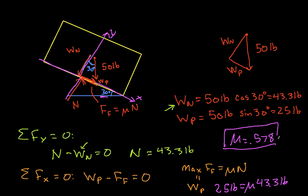So what this says, to make sure it's clear what we've done here, if the actual coefficient of friction is greater than this value, then the block will not slide. So if mu is 0.7, then the maximum value of F sub F would be 0.7 times 43.3, which is about 30 pounds, which is greater than W P. And so if W P is less than the maximum value of the friction force, the block stays put. It doesn't move.